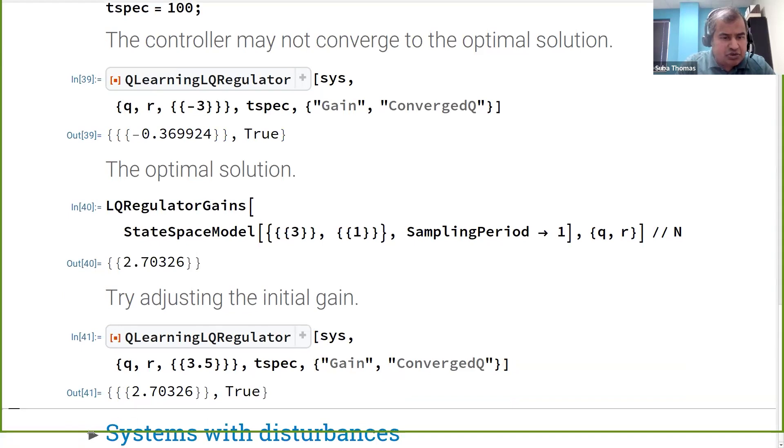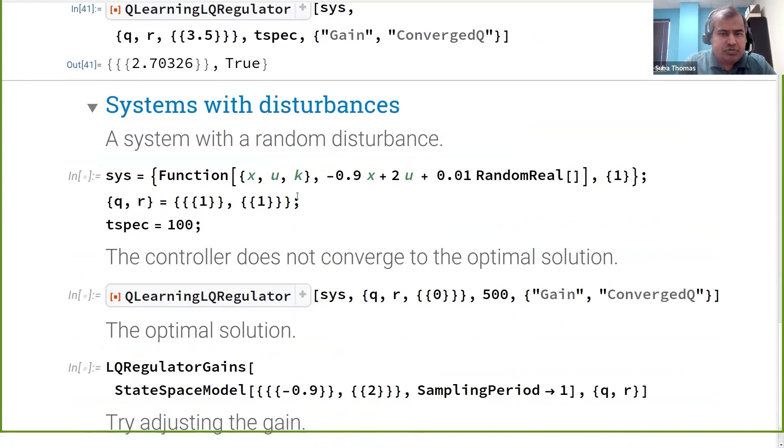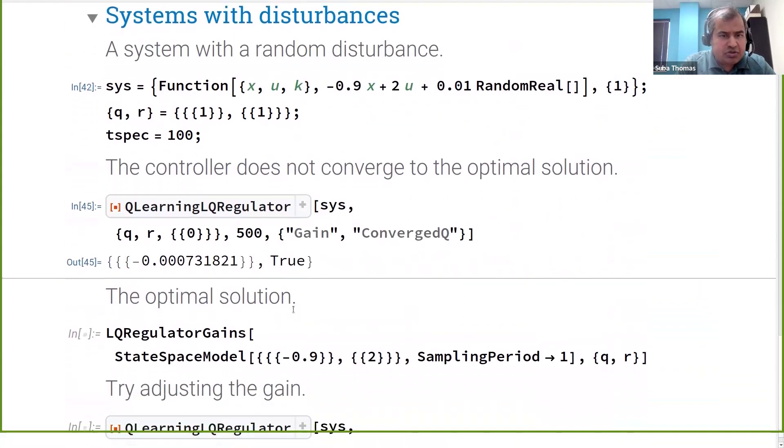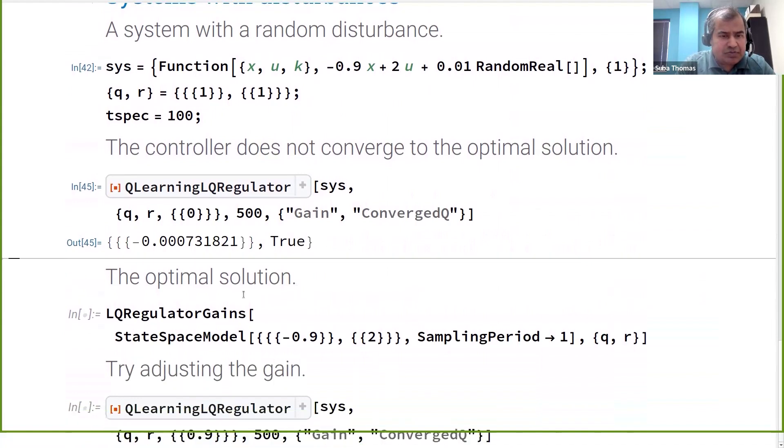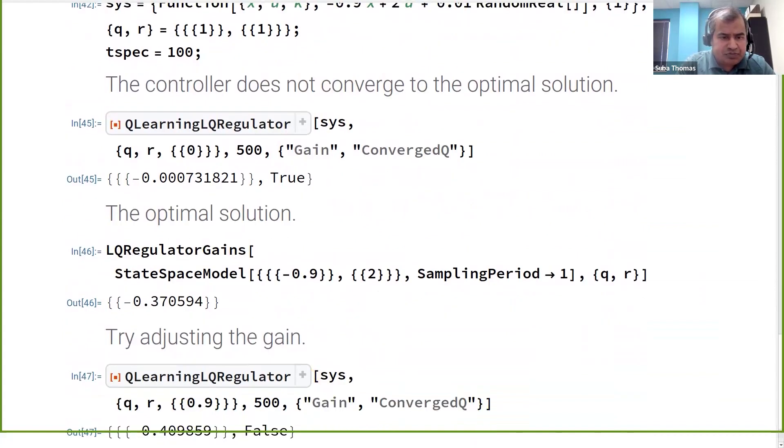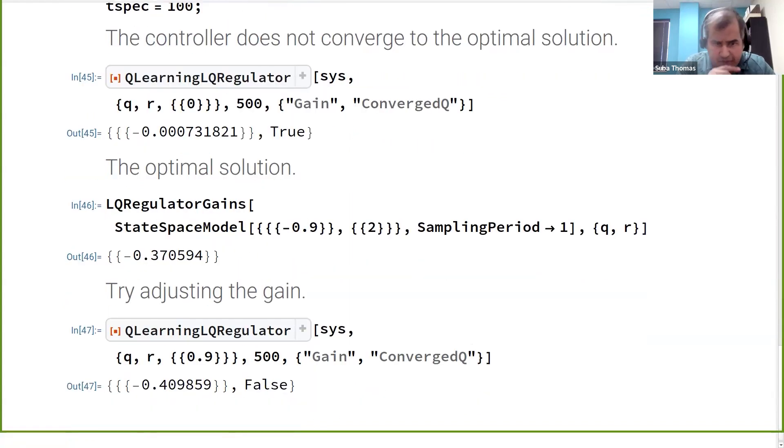For systems with disturbances, in control theory, we have all physical systems; in the real world, they experience disturbances. Again, here, we see that the system may not converge to the original solution just by choosing an optimal gain. This is the optimal solution we're looking for. We have to tweak the gains of the initial gain a bit for it to come close to the optimal value.